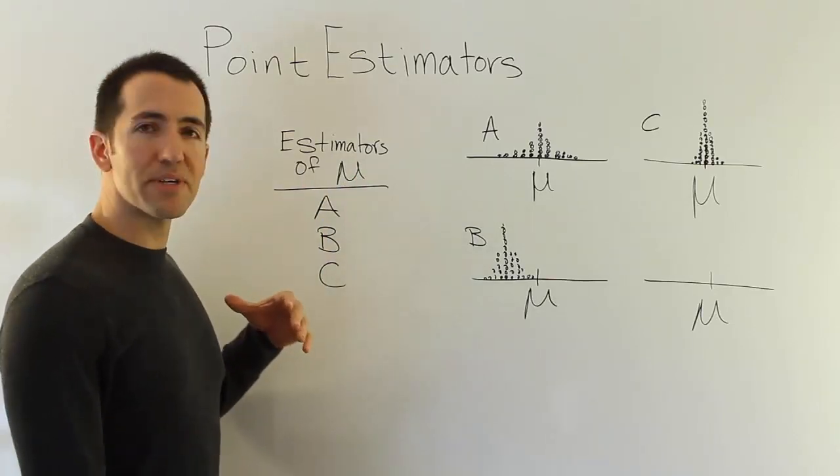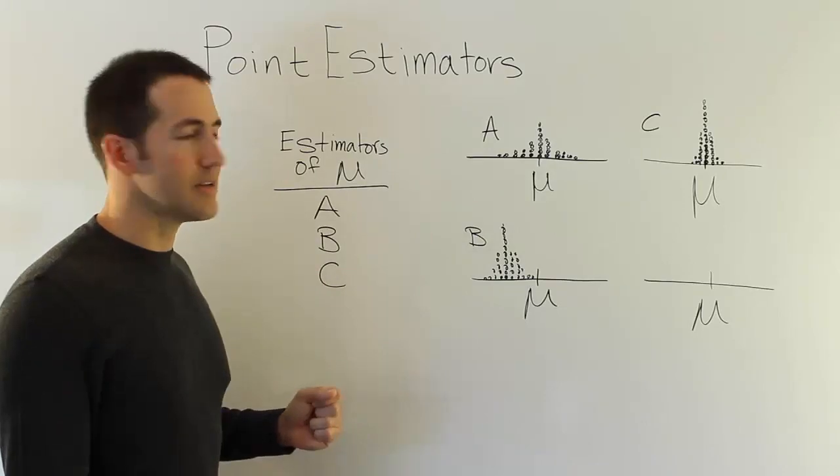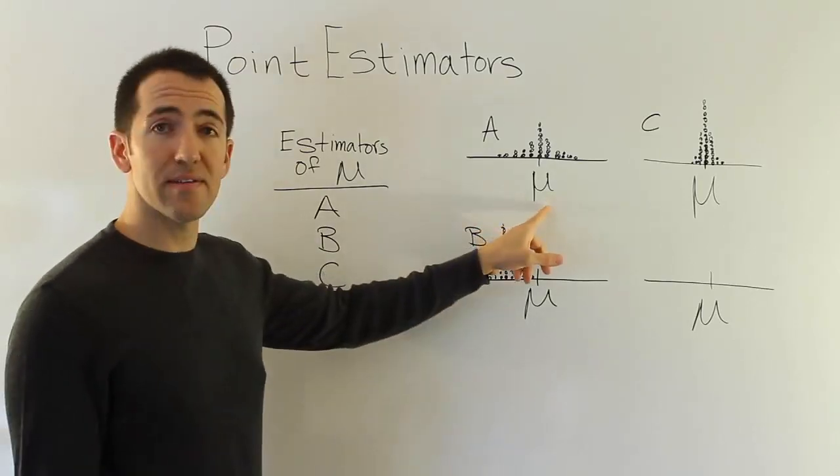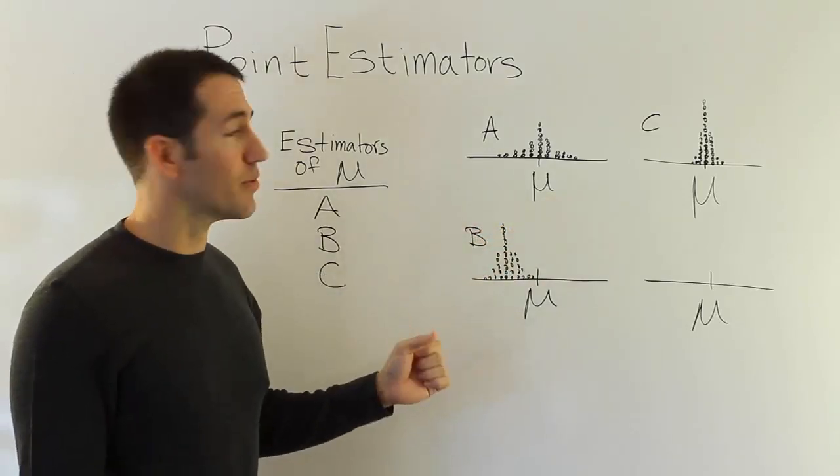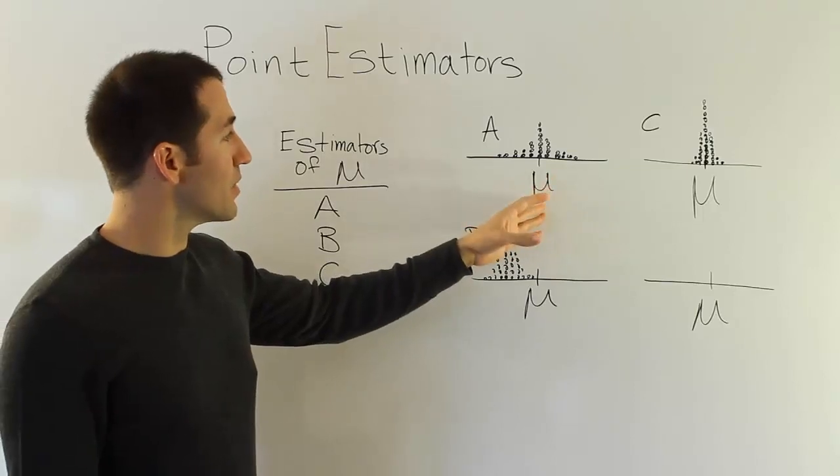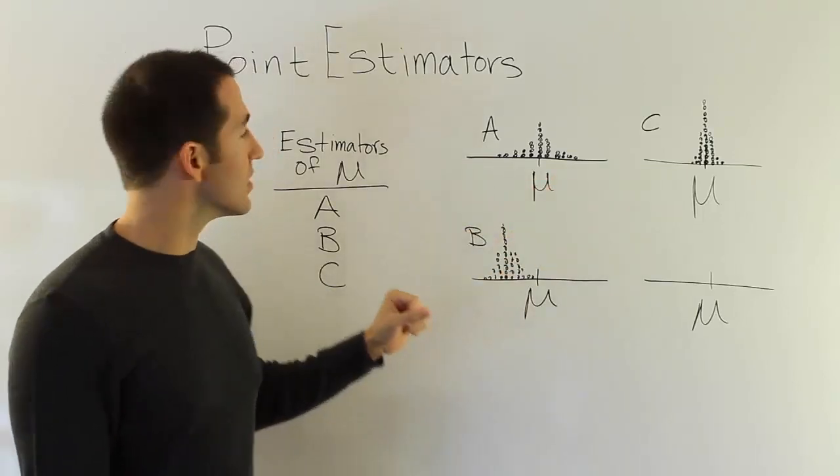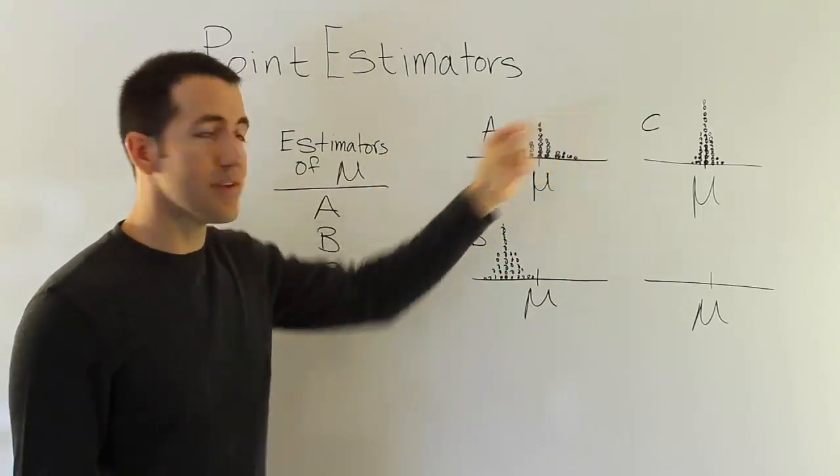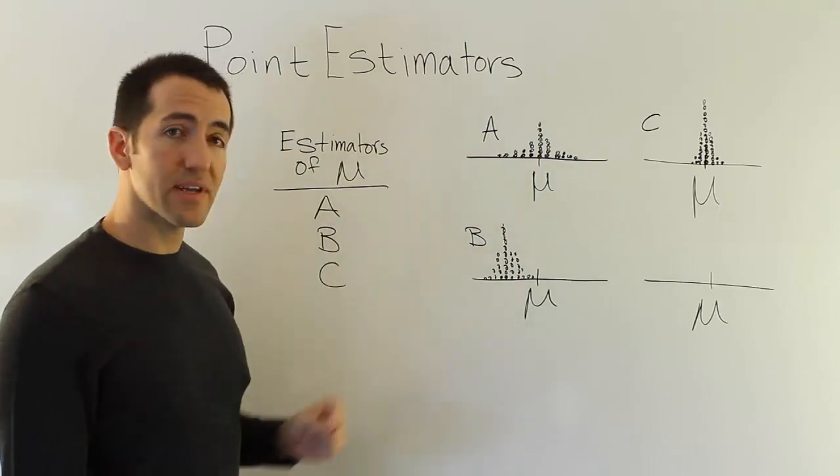In a sense, we're going to pretend like we're all-knowing, that we're omniscient, and we know where the true population mean is, something we seldom ever know in the real world. But we're going to pretend that we know where the population mean is, and we're going to look at the performance of these three estimators, A, B, C, in trying to predict that value.